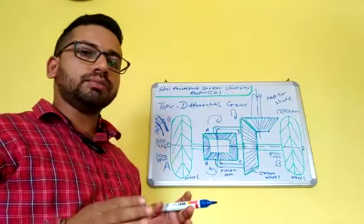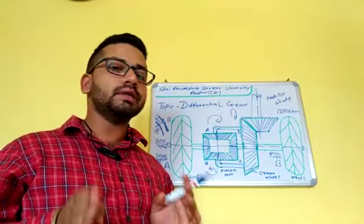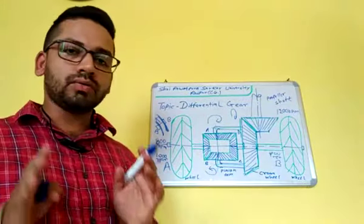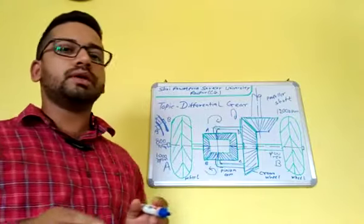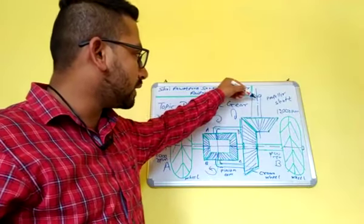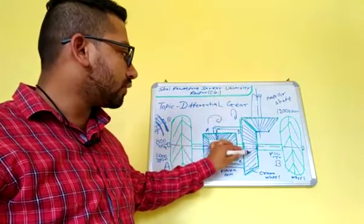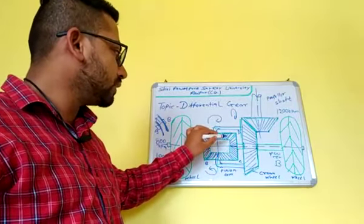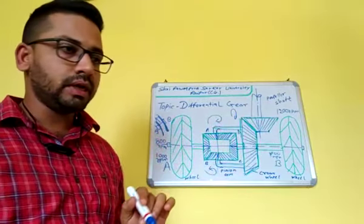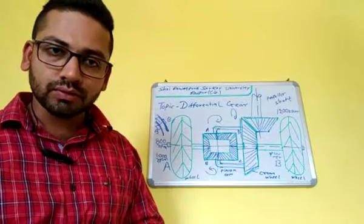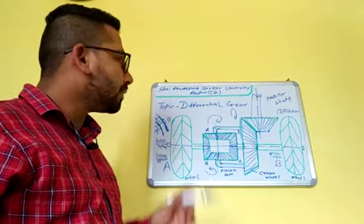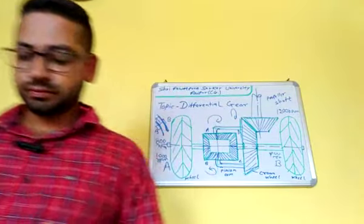So we can see that without the differential gear, the engine power from the rear axle cannot provide proper turning. We use the differential gear to allow the wheels to turn at different speeds, which is the main purpose of the differential gear. Thank you.